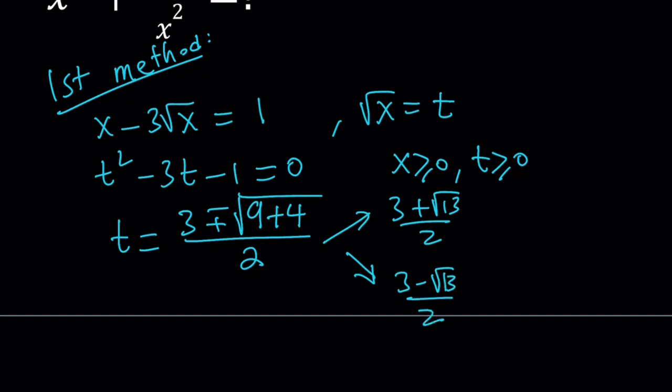But unfortunately, 3 is less than square root of 13, because 3 is square root of 9. So this is a negative quantity, and remember, we want t to be greater or equal to 0. Therefore, we're going to reject the second solution. So we're only going to go with one solution, which is good. That is the only t value that works. And guess what we're going to do? We're going to find the x value from here.